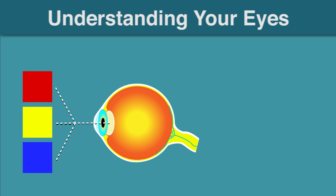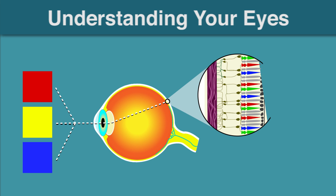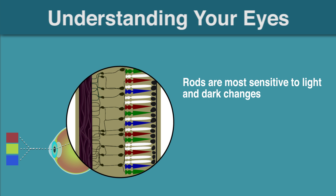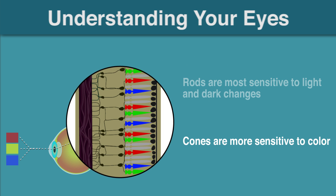Light enters your eye and passes through to the back where they connect with color sensitive cones and rods. Rods are most sensitive to light and dark changes. Cones are more sensitive to color.